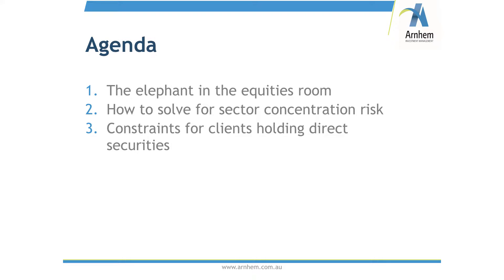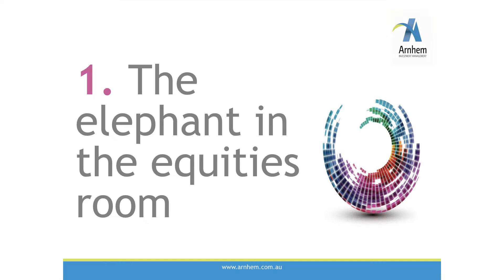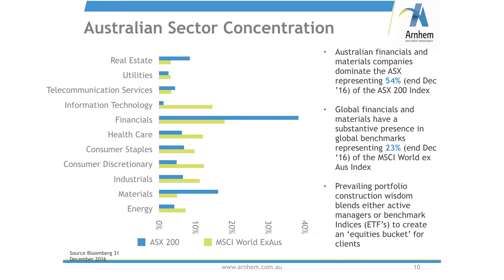The ASX is very concentrated in two sectors — financials and materials — at about 54% of the index, well ahead of any other index around the world. In the MSCI World, those same sectors are around 23%, so still a healthy chunk but clearly not as concentrated. The prevailing portfolio construction wisdom is to add global exposure via an ETF or global equity fund to diversify away from this concentration risk. The problem is that most clients will typically sell their cash holdings to fund the move into global equity, ending up with more dollar exposure in those same two sectors.